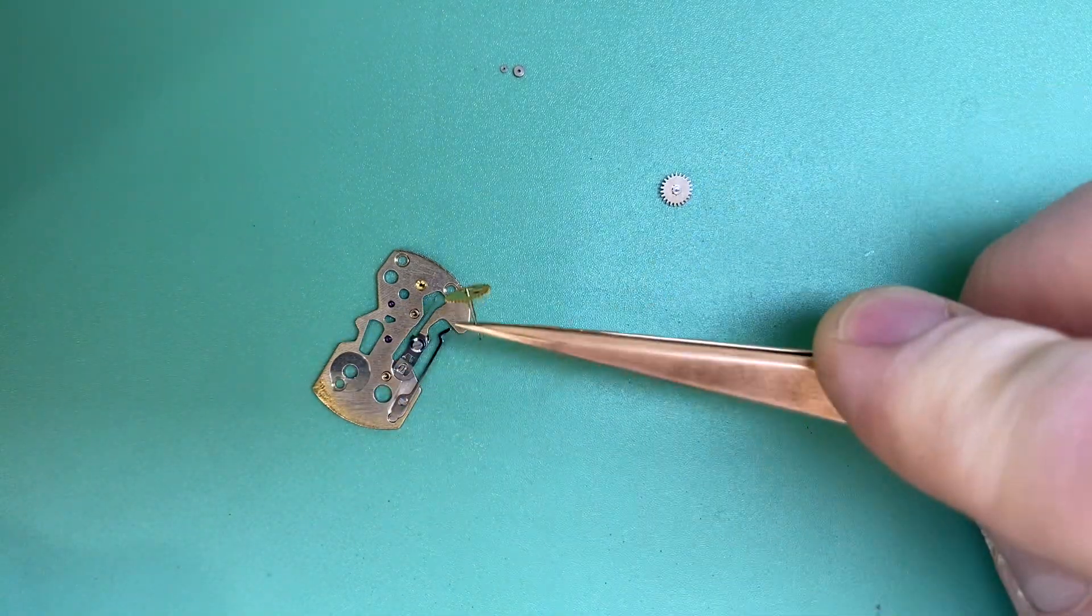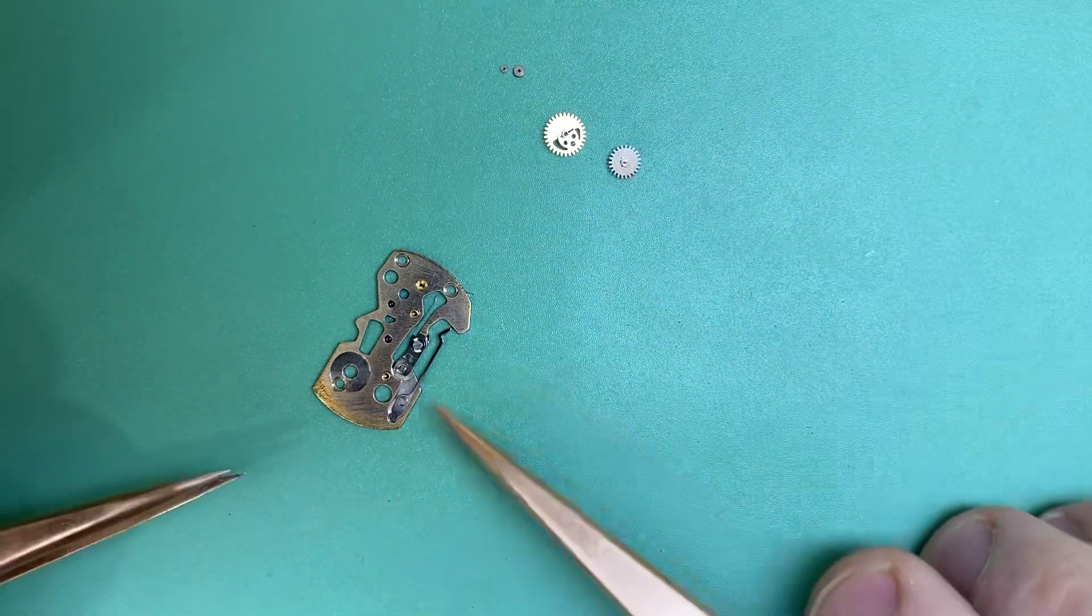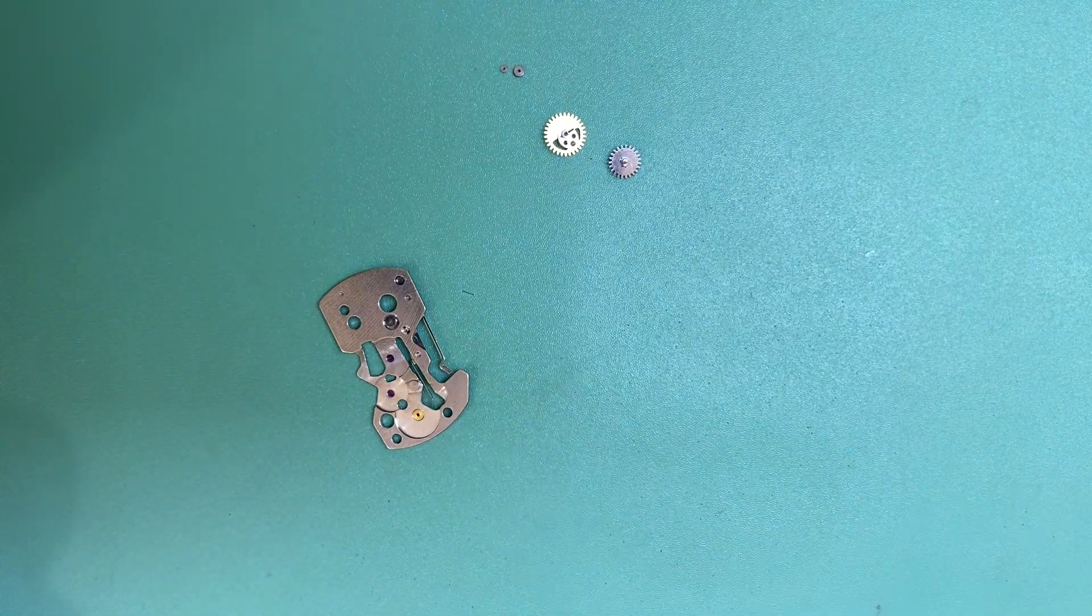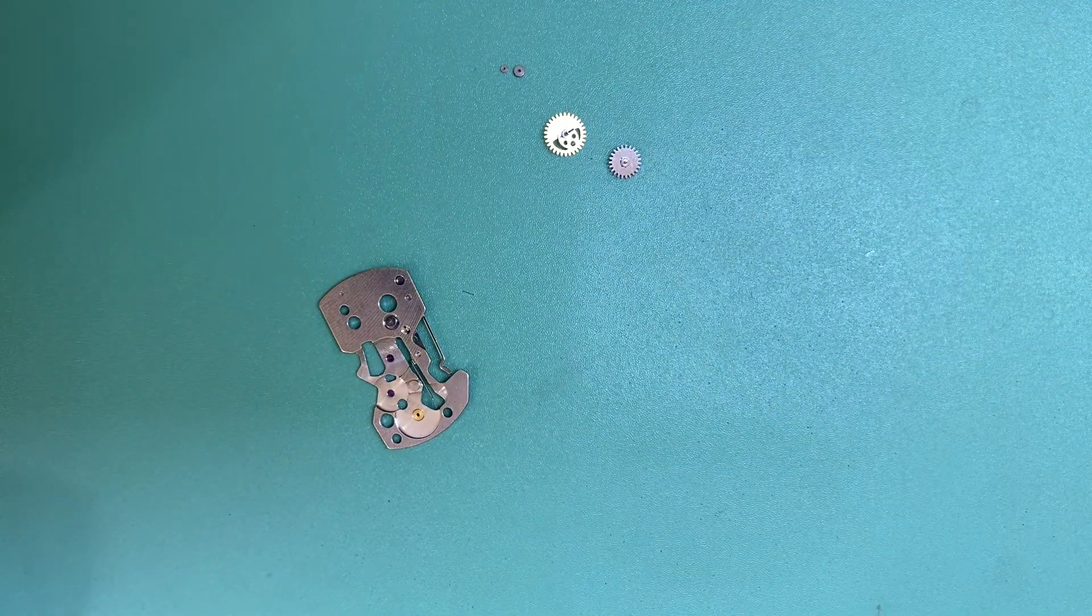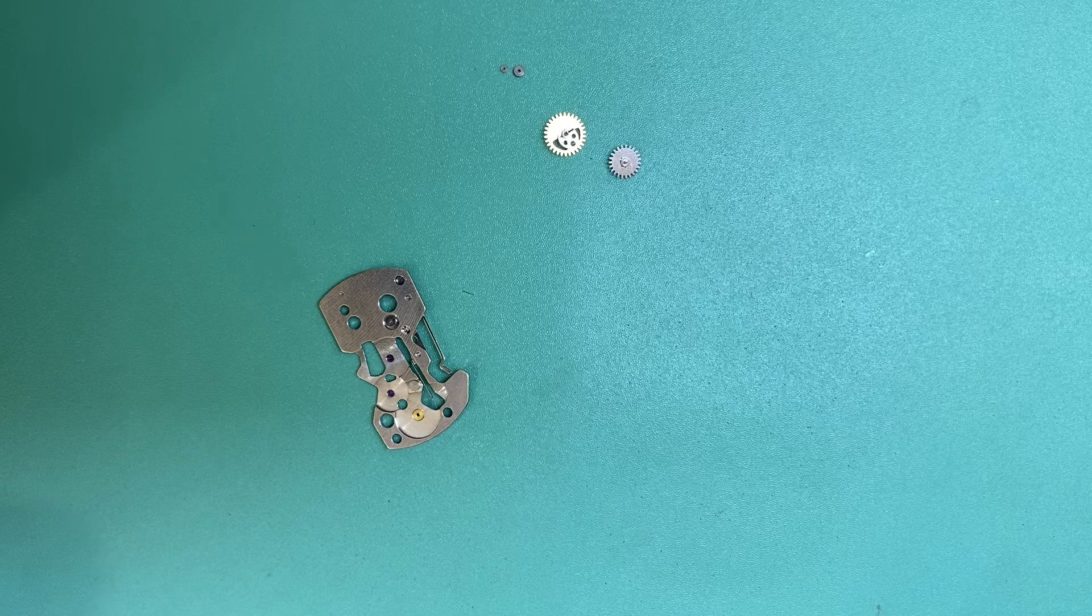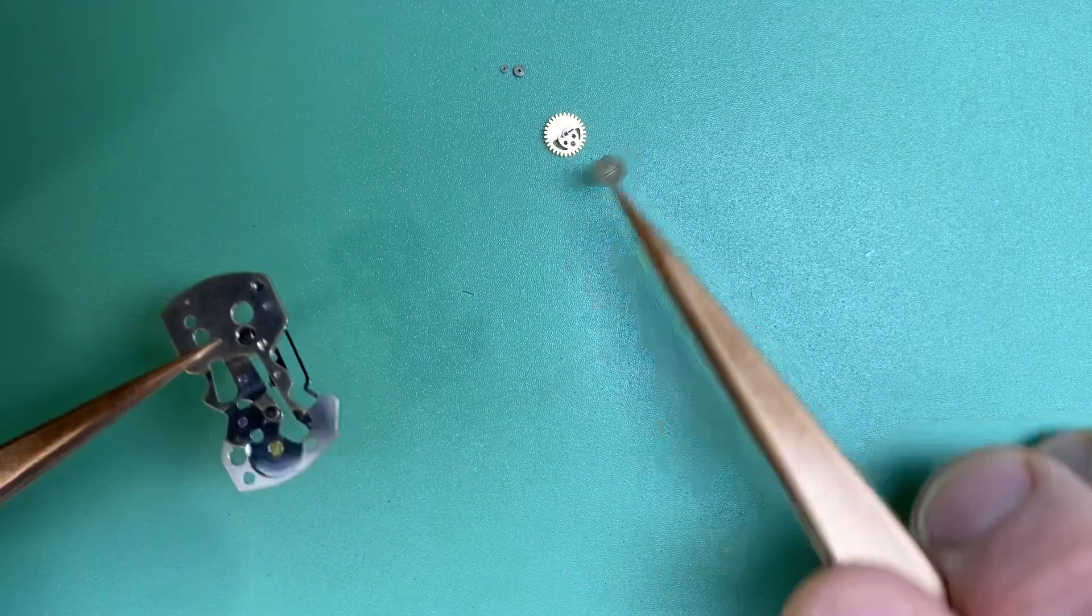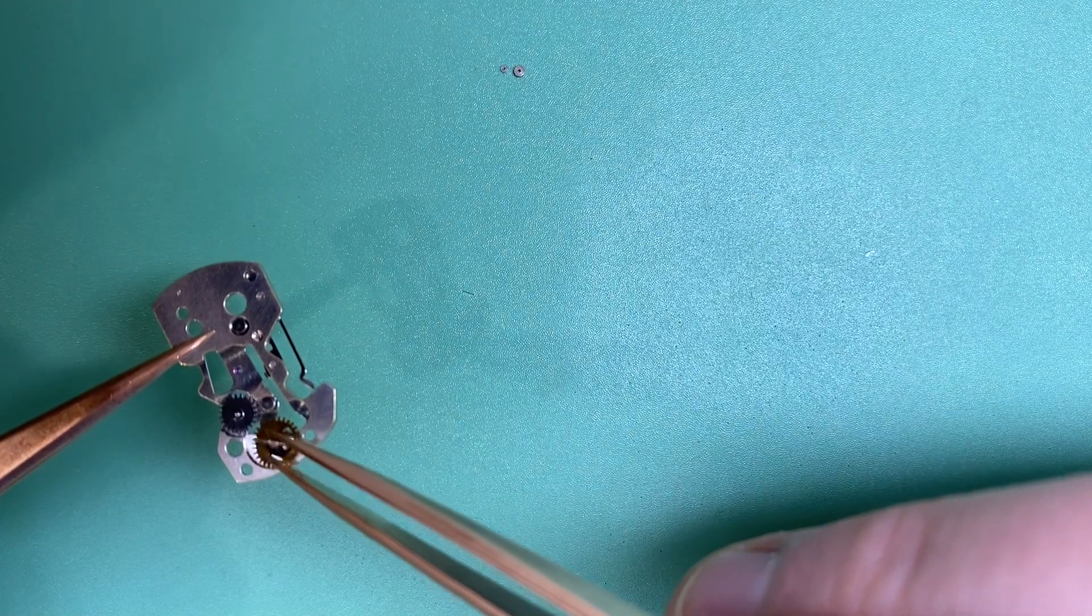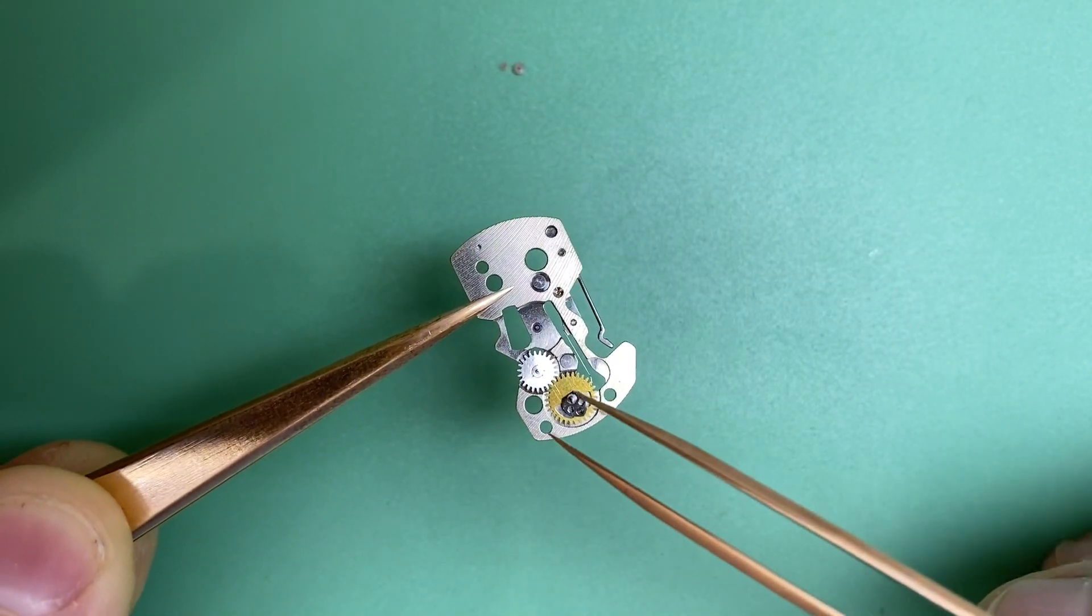We have our minute counting wheel and we have our intermediate minute counting wheel. Now, this jewel here is what our chronograph runner or our clutch wheel bears into, into that top jewel. Now, occasionally those jewels can be chipped or cracked and we have a stock of them here to replace those. But our intermediate wheel for our minute recorder, which sits in here, and our minute recording wheel also face various wear issues.